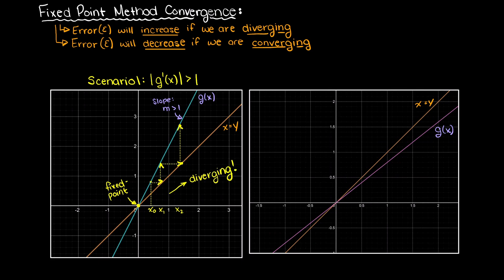As you can see here, this is never going to converge to our fixed point, as our slope of g in absolute terms is greater than 1, so we will always diverge from our fixed point.